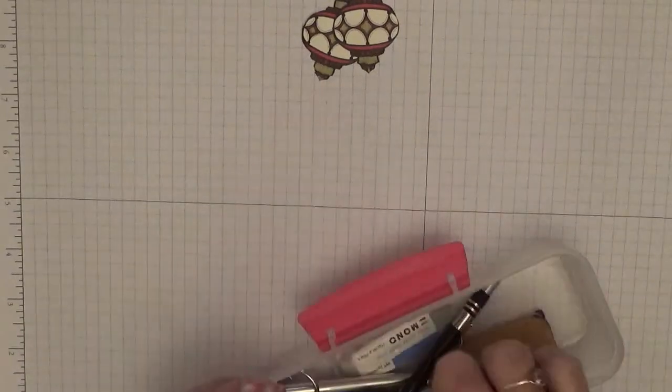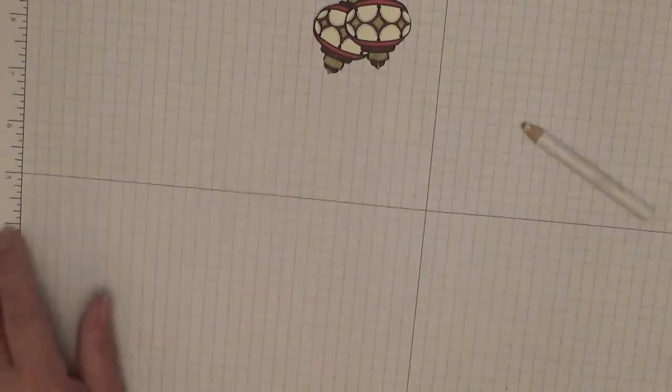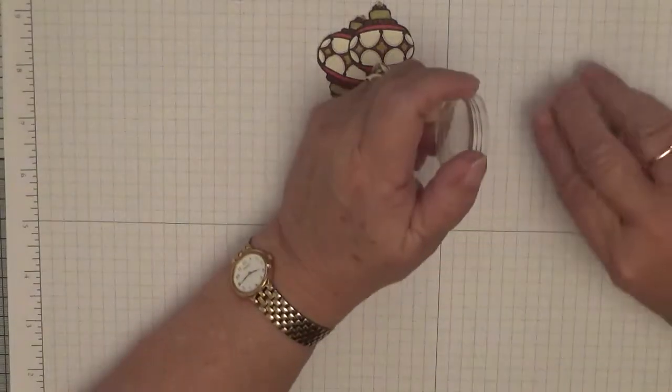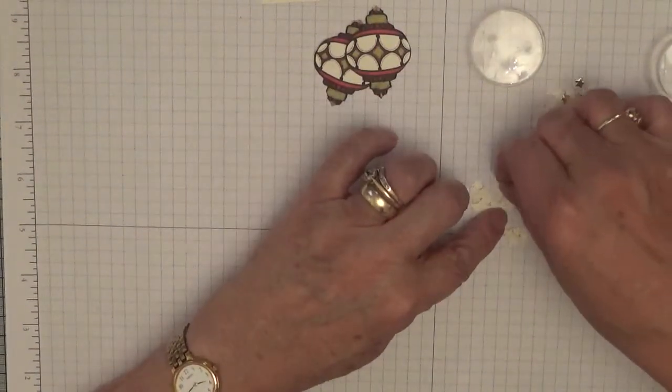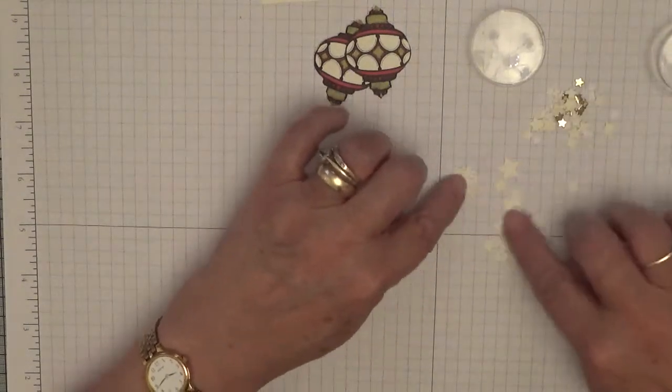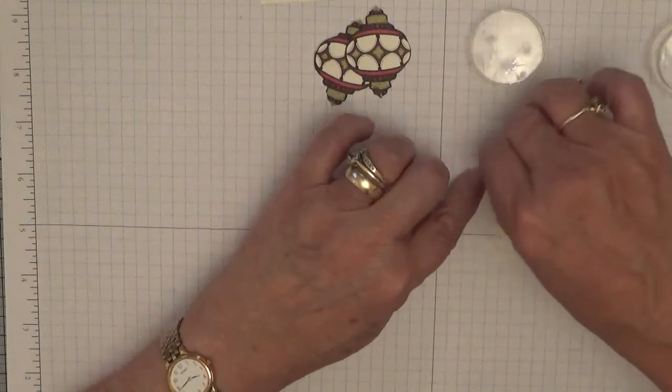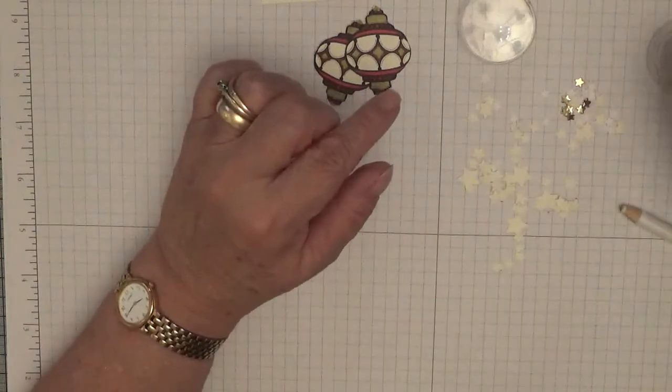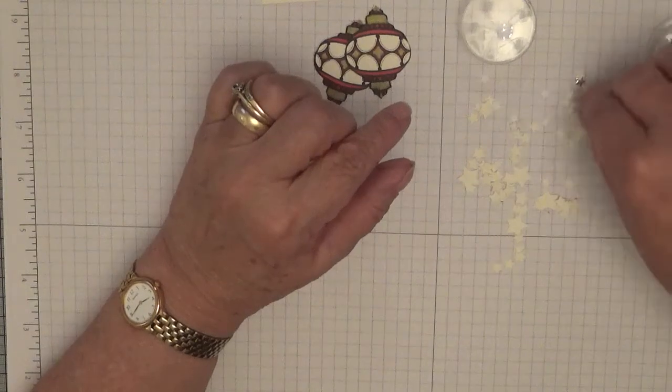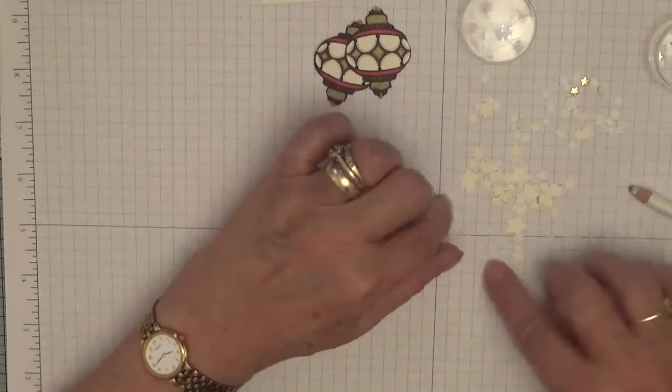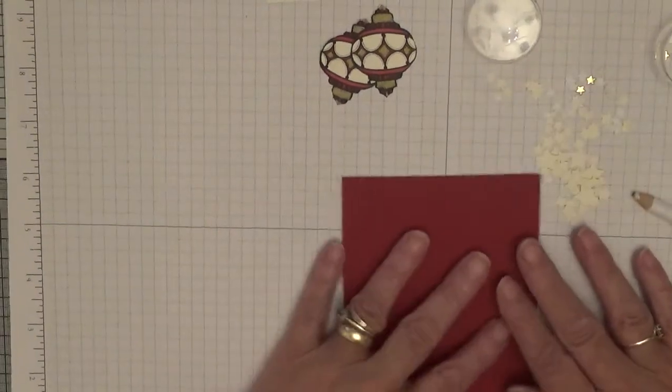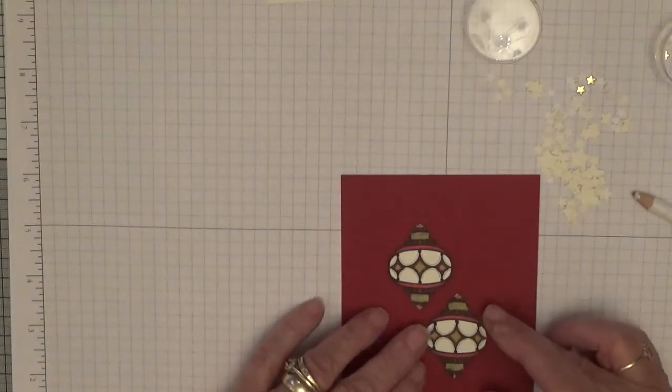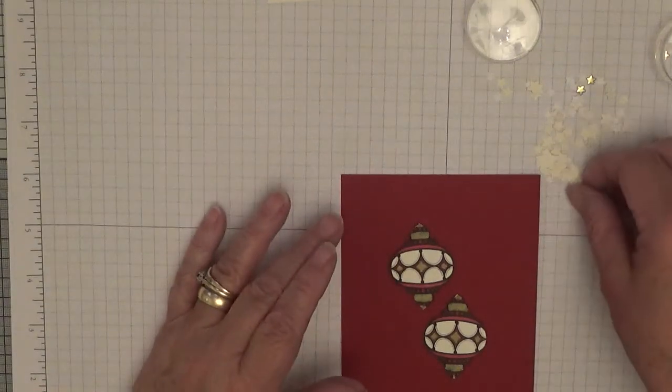I'm just going to get my sticky pencil so I can pick up stars. In here I put them in and there's gold ones and white ones, so I've got to watch out what I'm picking up. We're going to put these down on dimensionals like that in the middle of the card. What we're going to do is put stars around them.